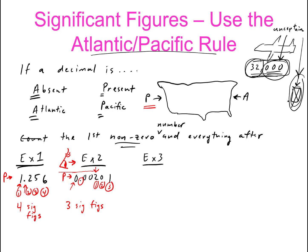Example three: the cruising altitude, 35,000 feet. Is a decimal point present? No, the decimal point is absent. So we need to start counting from the Atlantic side. Is this a zero? It is, so it doesn't count. This doesn't count either, neither does that. We start counting here — the first non-zero is the 5, so 1 and 2. This number has two significant figures. The pilot is sure about the first two, but not the last three digits.